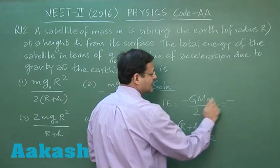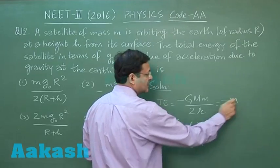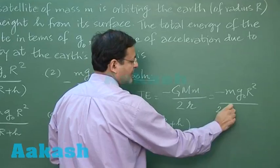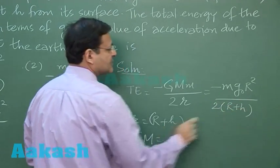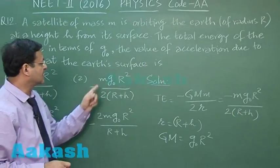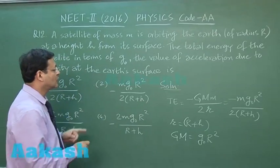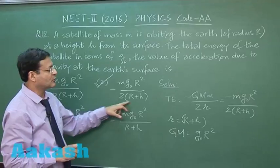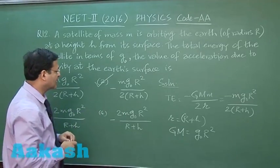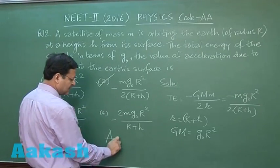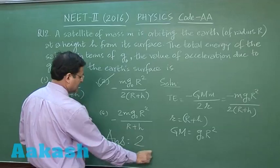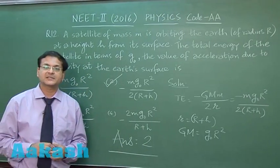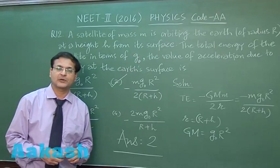So it will become: minus m·g₀·R² upon twice of (capital R plus h). This is the expression to search among the options. You can see option number 2 gives the same expression: minus m·g₀·R² upon twice of (R + h). So I am marking answer 2 for question number 12. Now let us switch over to the next question, that is question 13.